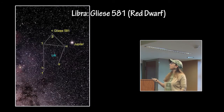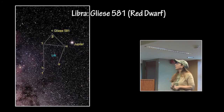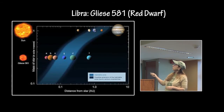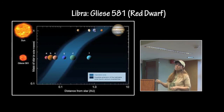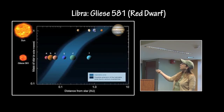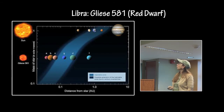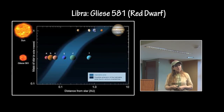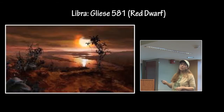In the constellation Libra, we have Gliese 581, which is a red dwarf. This red dwarf has six planets, and one of those planets happens to be smack in the middle of the habitable zone. One planet is not quite in the center of the habitable zone, and another is really in the center, so that is looking like a good possibility for maybe some type of life form. This is an artist's illustration.